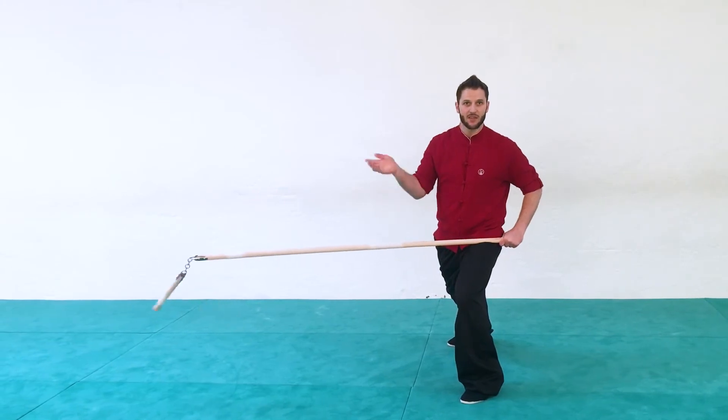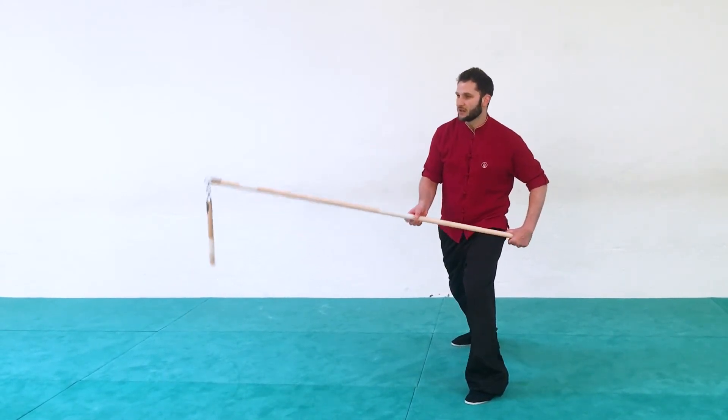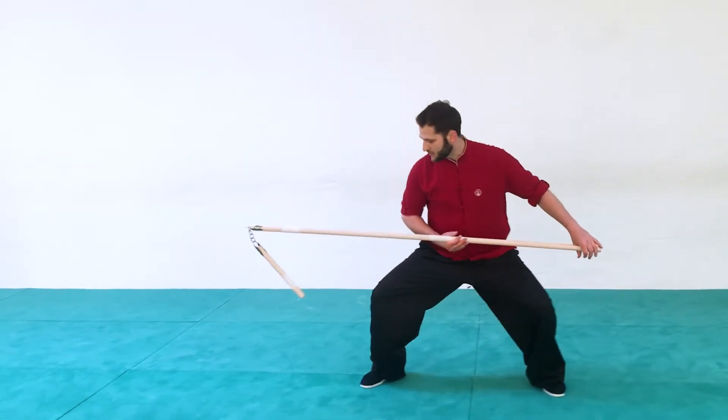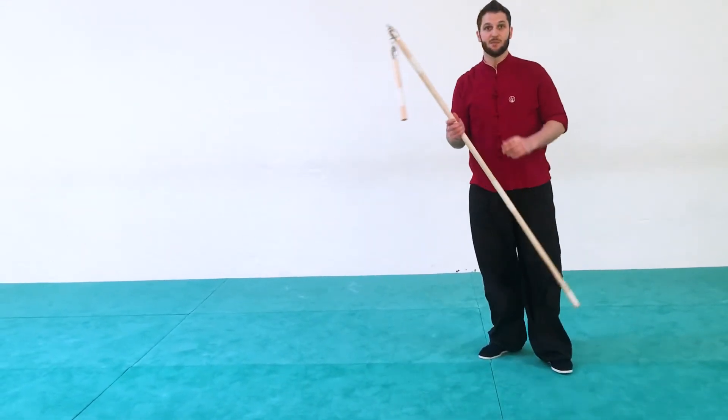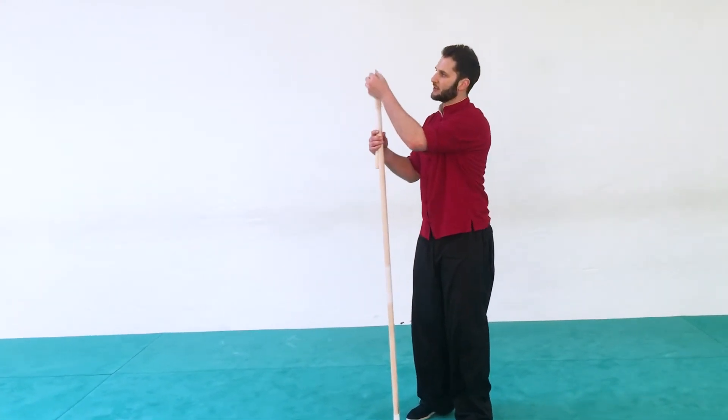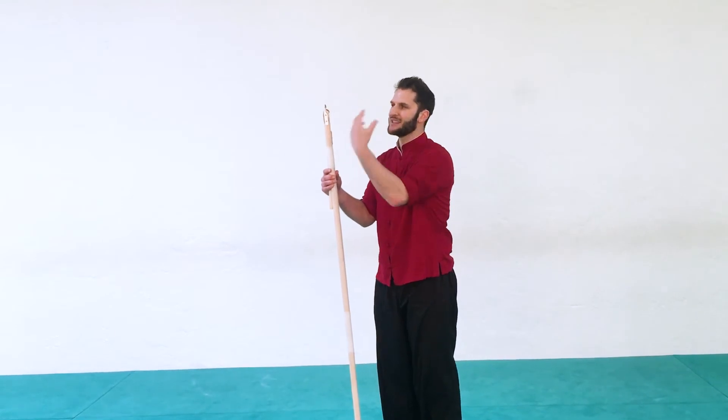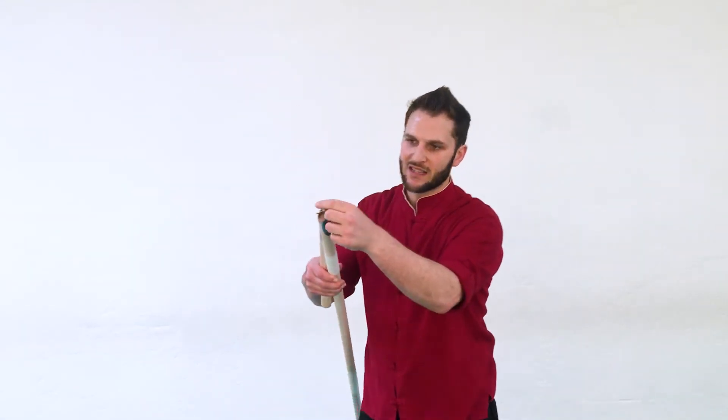Now the last thing we're going to do is we're going to spear in with the staff, so I'm going to step towards my opponent and I'm going to spear. I like to say spear on this one because you have the metal shackle right here that has a—it's not sharp like a blade, but you have a nice concentrated small end here that you're going to be attacking with.